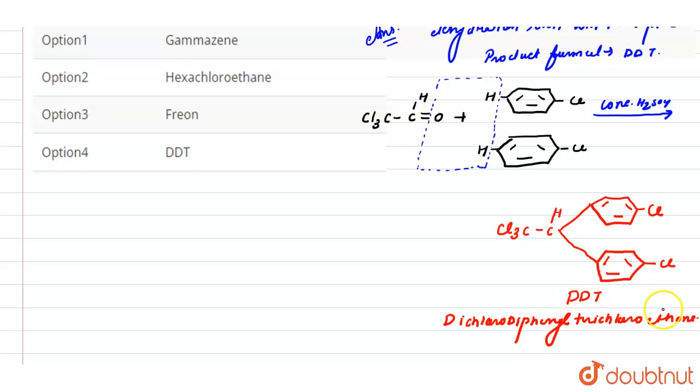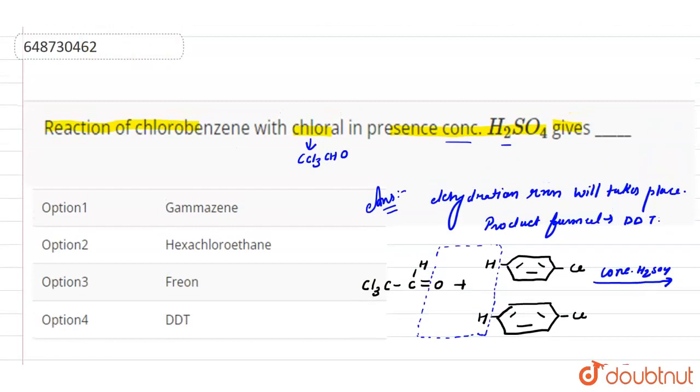And water will be released. So we see the options here. The correct answer for this question - reaction of chlorobenzene with chloral in the presence of concentrated H2SO4 gives DDT. Option 4 will be the correct answer for this question.